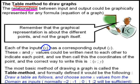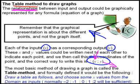Now each of these inputs, or the x values, has a corresponding output, y. And these x and y values could be written next to each other to indicate each point, and we call this the coordinates of the point. The correct way to write this would be round brackets, x, semicolon, y, close the bracket, where the input is always first, the output is always last. The order in which they are written is very important.